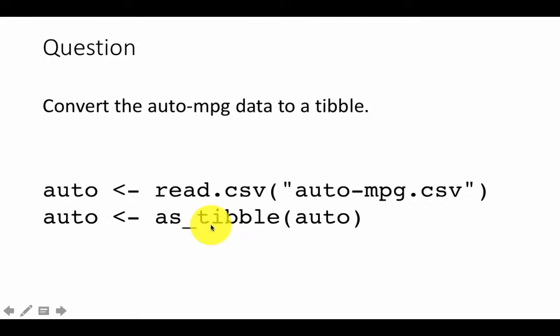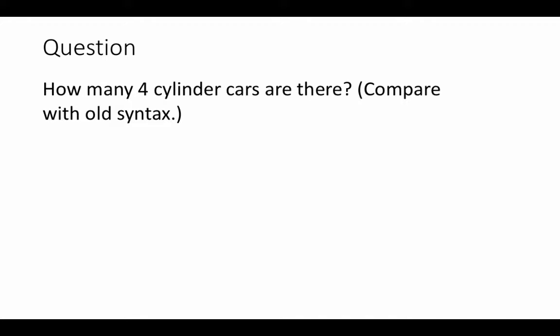You could do everything in dplyr with regular data frames and it will all work, but when you print out results a tibble is more user-friendly — it prints 10 rows, shows you data types, and gives you more information than a regular data frame. So we've converted it to a tibble. Now let's answer some questions about it.